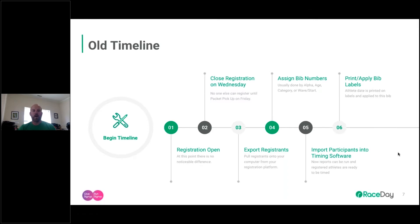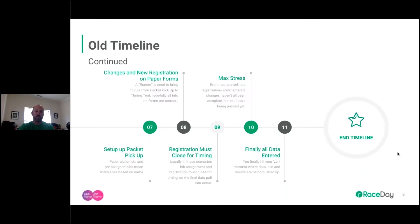In the old workflow, the timer assigns bib numbers, imports into participant software, prints and puts bib labels on bibs, gets bibs back to you, you open packet pickup using paper forms to handle changes, then you close registration 30 minutes before the race so the timer or data entry point can get all that information entered before the race starts.